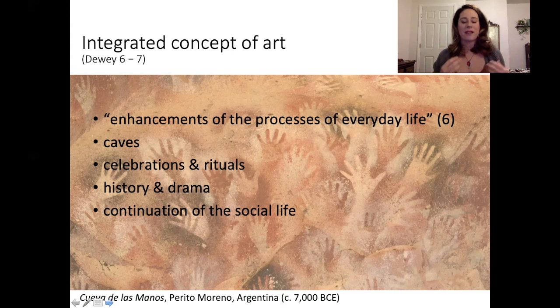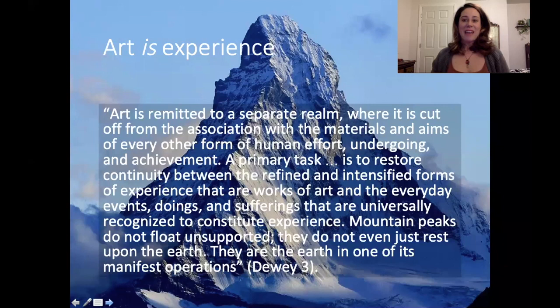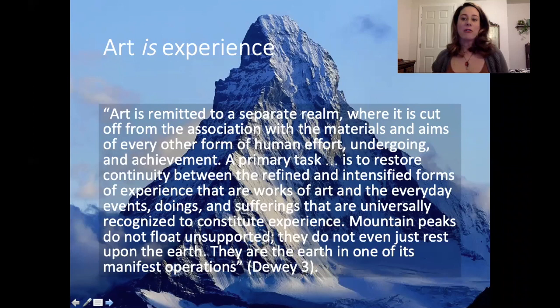For Dewey, there's a continuation of social life we see in older practices around art, and in modernity we've kind of lost that continuation. We now have a chasm between aesthetic experience and ordinary experience, and the entire point of his book is to close that gap and bring aesthetic experience back into community with our ordinary everyday lives. He does this by arguing that art is experience — it's not removed from the material world or our ordinary lives. He uses the metaphor: mountain peaks don't float unsupported. Our amazing experiences in art are connected to what grounds us in the world.